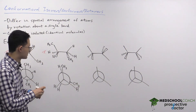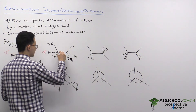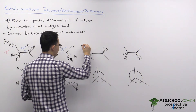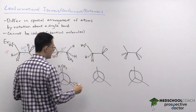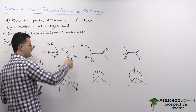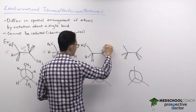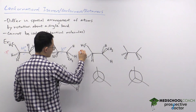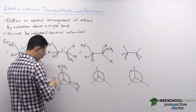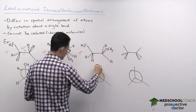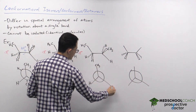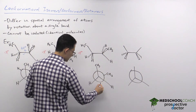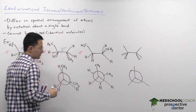We can repeat this with another 60-degree rotation. Again we keep the front atom unchanged — methyl group on top, hydrogens in place. After this rotation the back methyl group rotates to the top as a wedge coming out of the page. In the Newman projection, the front atom is still unchanged, but now the back methyl group faces the top and toward the right, with the hydrogens occupying the other two positions.